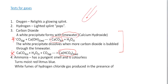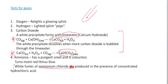How do we test for ammonia gas? Ammonia gas has a pungent smell and is colorless. To test for it, we take moist red litmus paper — it will turn blue. Also, white fumes of ammonium chloride are produced in the presence of concentrated hydrochloric acid.